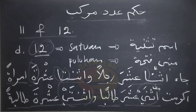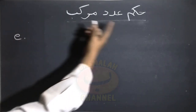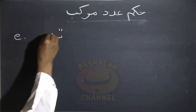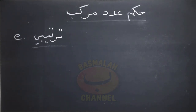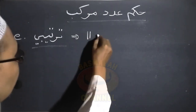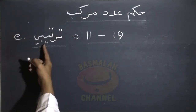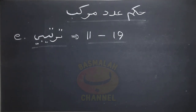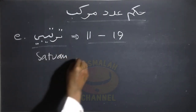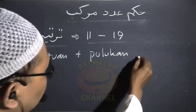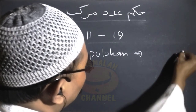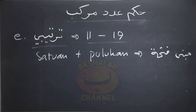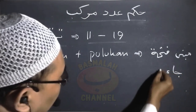Ini untuk adat asli, yaitu adat murokab yang masuk dalam kategori adat asli — adat yang menunjukkan makna banyaknya satuan. Kemudian ketentuan selanjutnya adalah manakala adat murokab tersebut berupa adat tartibi. Adat tartibi adalah adat yang menunjukkan makna urutan atau tingkatan. Dan ini berlaku untuk bilangan 11 hingga 19. Untuk bilangan satuan dan bilangan puluhannya, semuanya dihukumi mabni fathah.